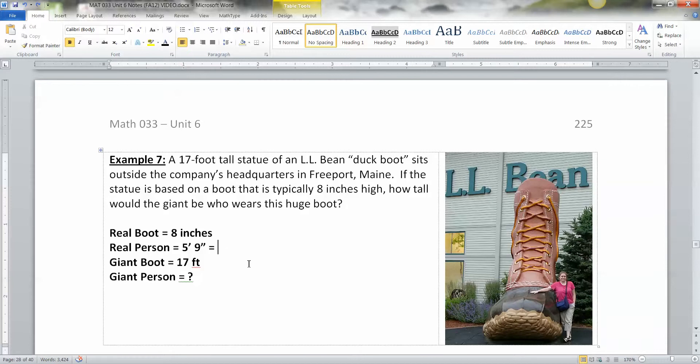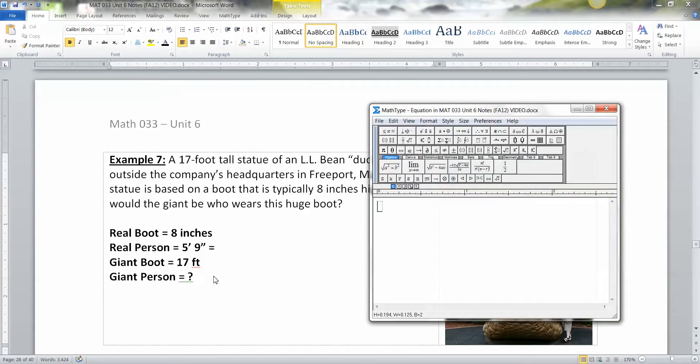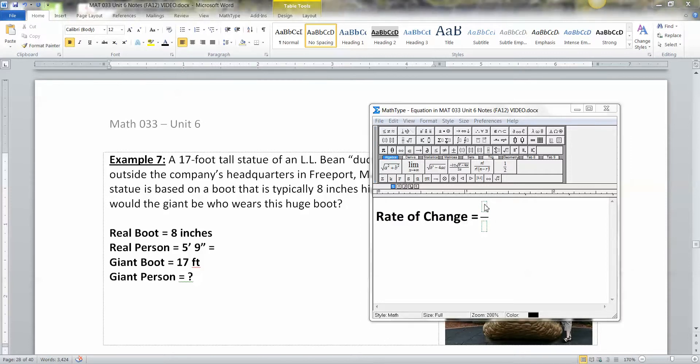Okay, so five foot nine. And then, let's see, we're going to have a few issues here. Then there's the giant boot, which is this and the giant person, which is this. Now, what we want to do is we want to make a rate of change. We want the ratio of how the boots change over how the person changes, or you can do it vice versa. But the way I'm going to do it is I'm going to say it's going to be boot over person, just for the heck of it.